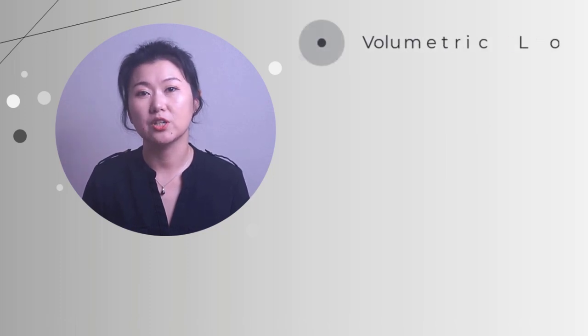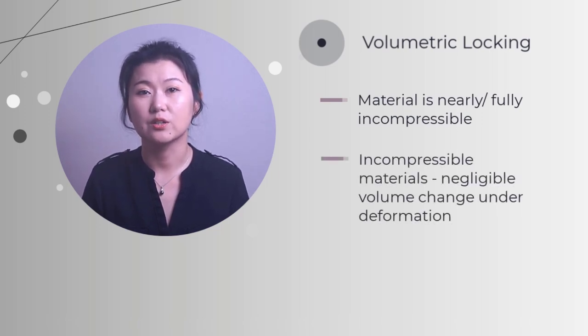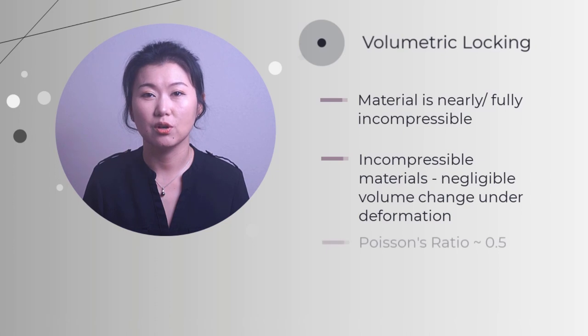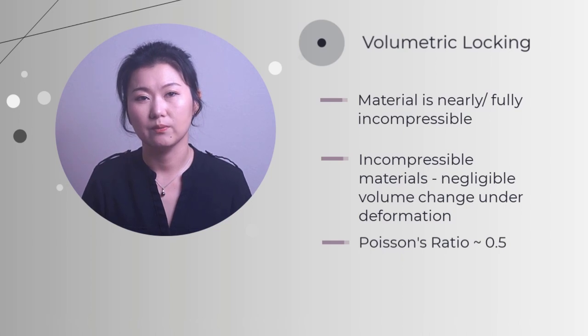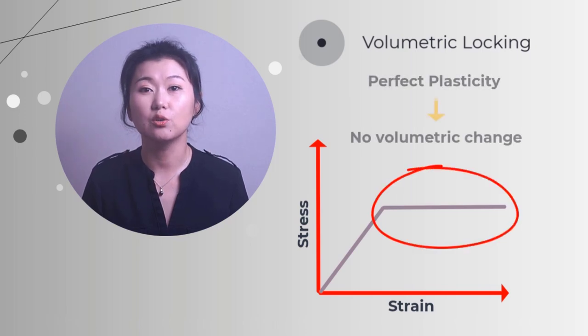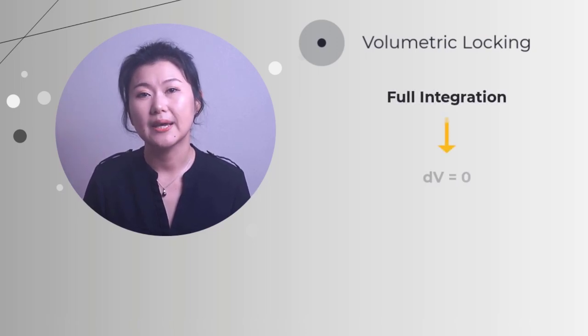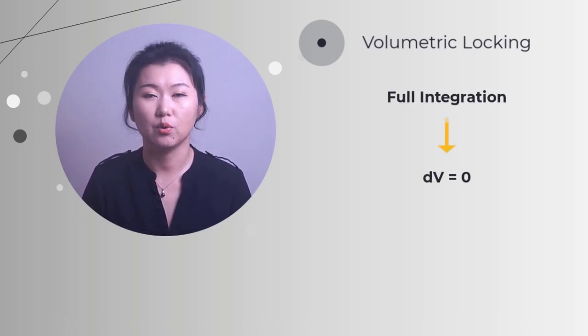The second problem for linear fully integrated element is volumetric locking when material behavior is nearly or fully incompressible. Incompressible materials are those materials that do not or almost not have any volume change under deformation. For linear elasticity, this can be described by a Poisson's ratio of 0.5 or nearly 0.5. Rubber-like material is a common incompressible material. Also, for metal plasticity, when the material enters the perfect plastic range, there is no volume change anymore. With full integration, the requirement of constant volume is applied to all the integration points in one element, which leads to over-constraint.